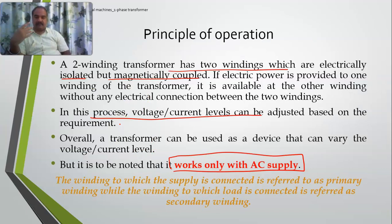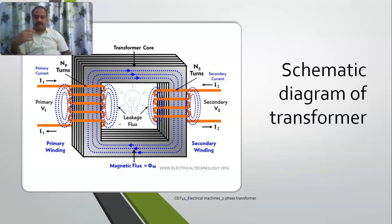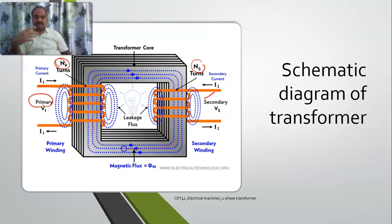Here is a picture of a real transformer. This is the primary winding wound with Np turns, and this is the secondary winding with Ns turns. These two are coupled by a magnetic flux. There is some leakage magnetic flux linking only with coil 1 and not coil 2, and some linking only with coil 2 and not coil 1, but magnetic leakage flux is generally less than 5%, so most of the flux will be linking both coils.